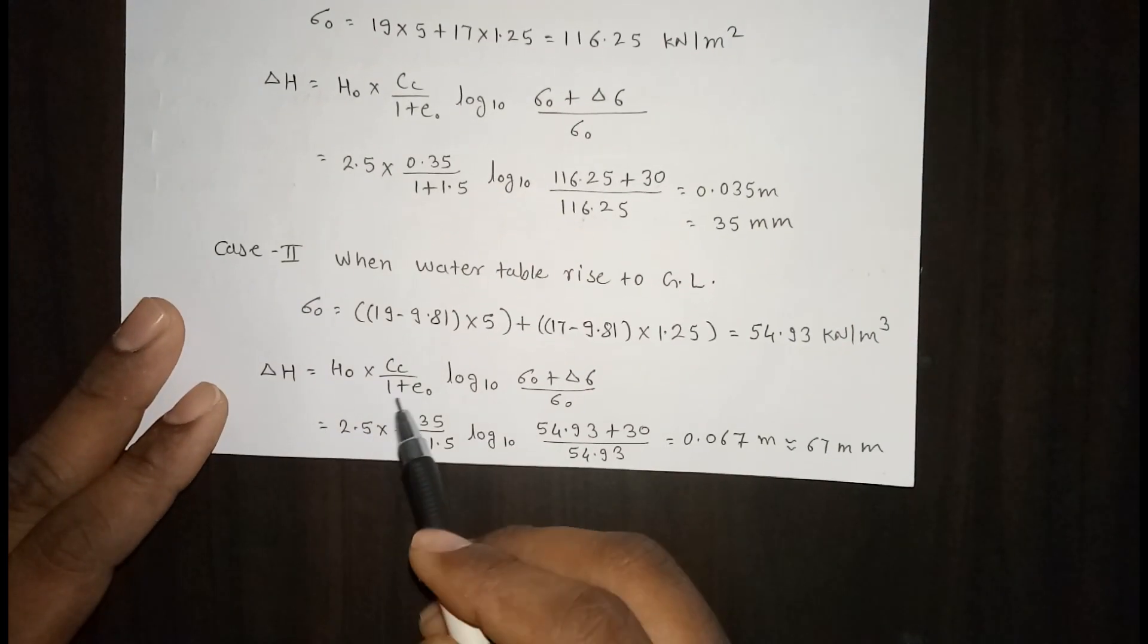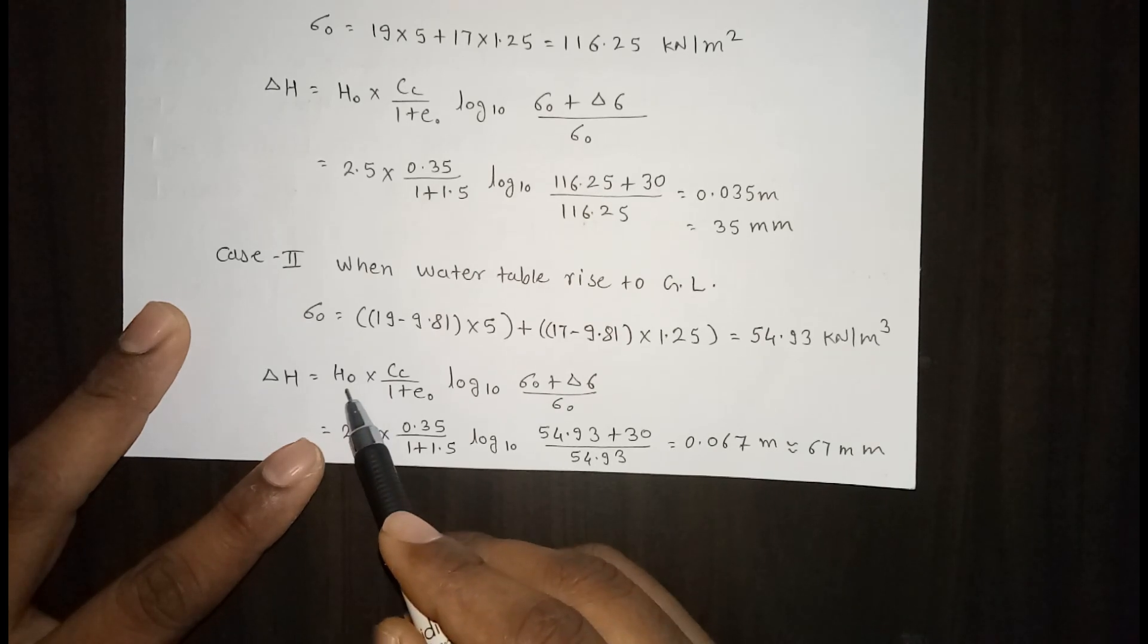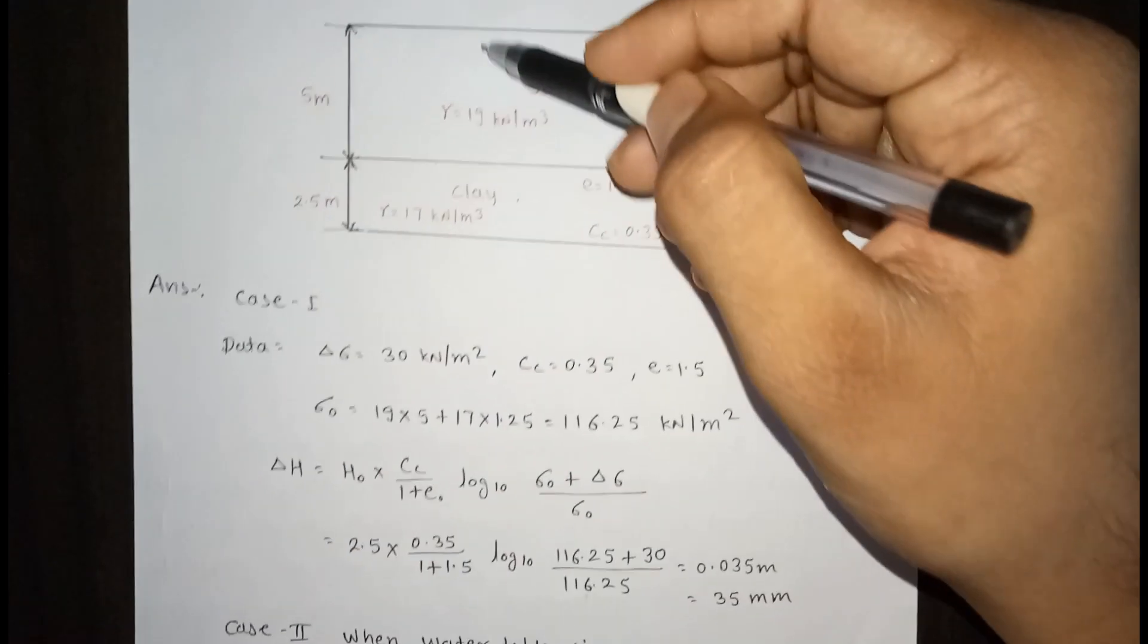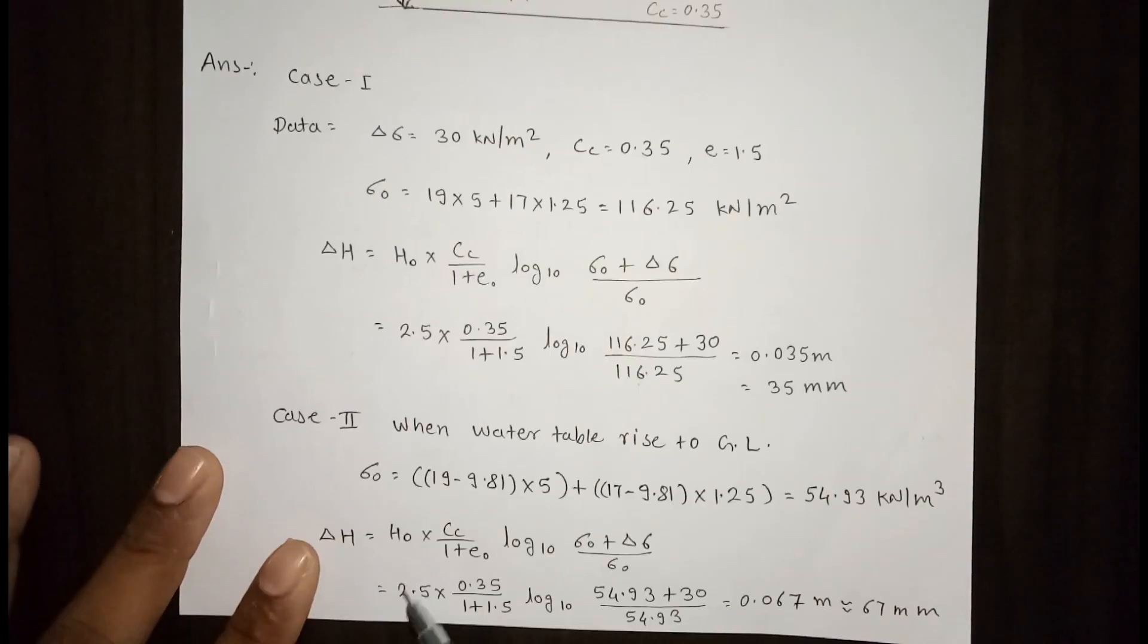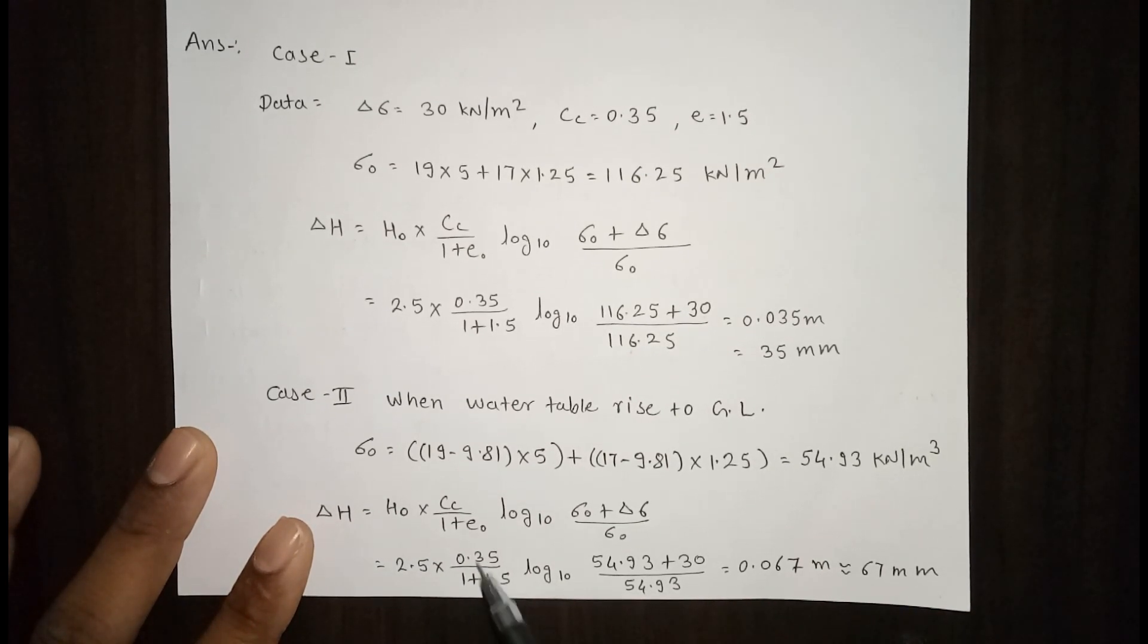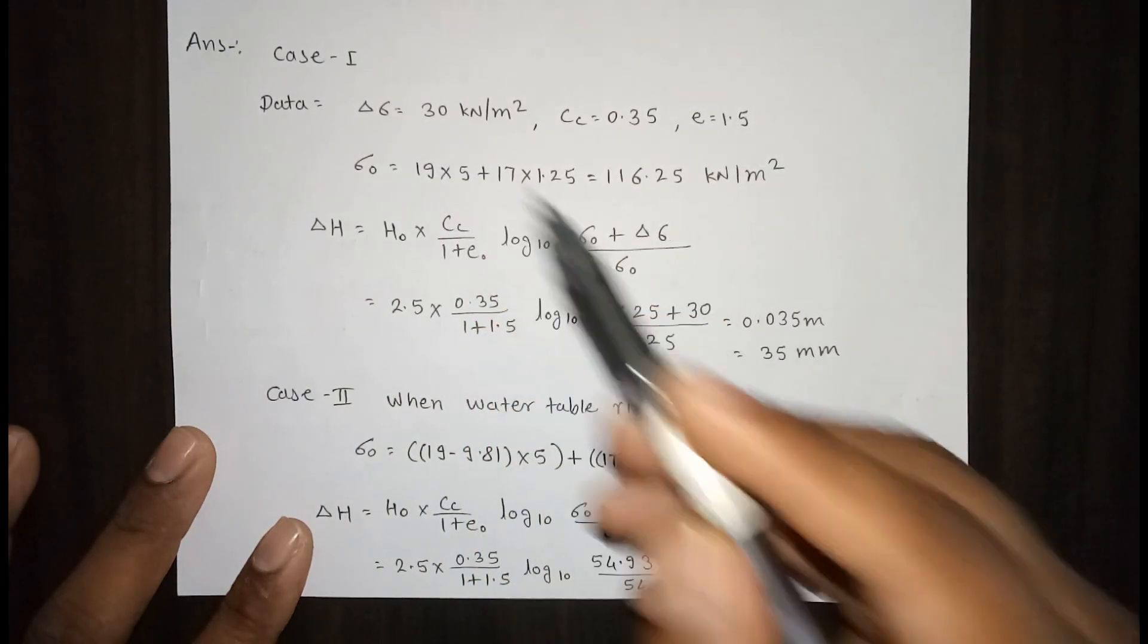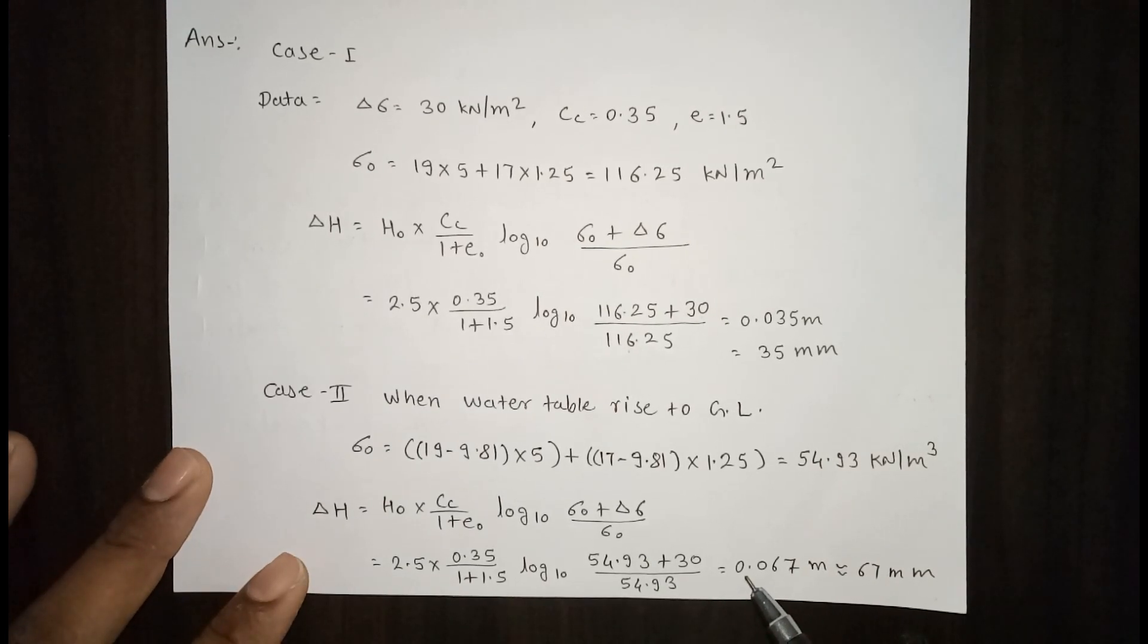Again, same formula you have to use. H0 is the depth of the clay layer which is 2.5. Always take care, depth of the clay layer, not the entire depth of the soil profile. Only we have to consider the height of the clay layer. So 2.5 times cc is 0.35, 1 plus e is 1.5, log of 10. Sigma 0 we have calculated as 54.93, delta sigma is 30. The settlement is 0.067 meters, that means 67 mm.